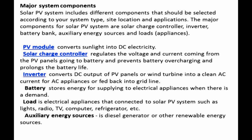The solar charge controller regulates the voltage and current coming from the PV panels going to the battery, and prevents battery overcharging to prolong battery life. The inverter converts the DC output of PV panels or wind turbines into a clean AC current for AC appliances or to feed back into the grid. The battery stores energy for supplying electrical appliances when there is demand. Loads are electrical appliances connected to the solar PV system, such as lights, radio, TV, computer, and refrigerator. Auxiliary energy sources include diesel generators or other renewable energy sources.